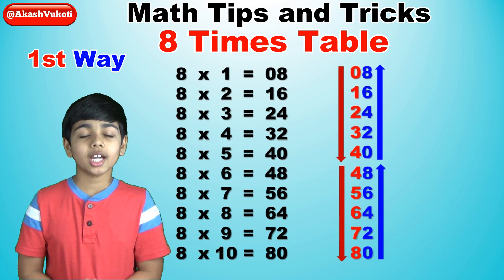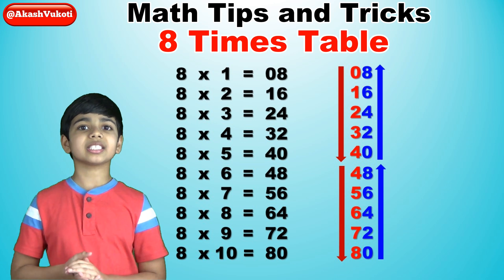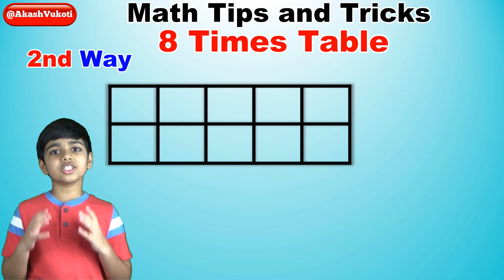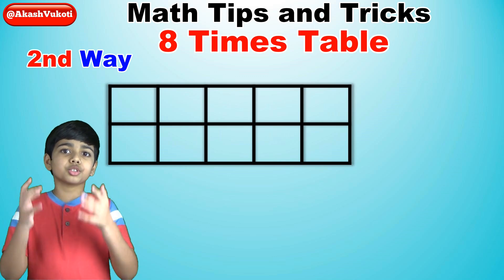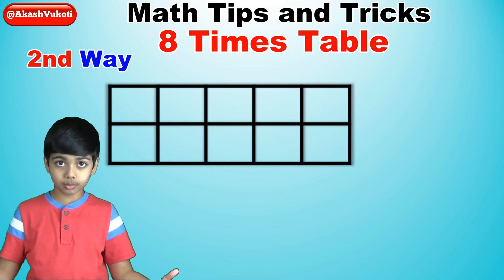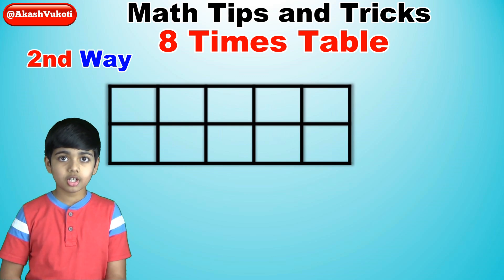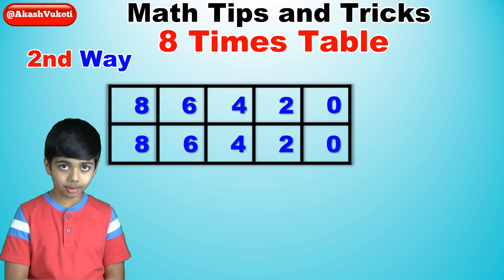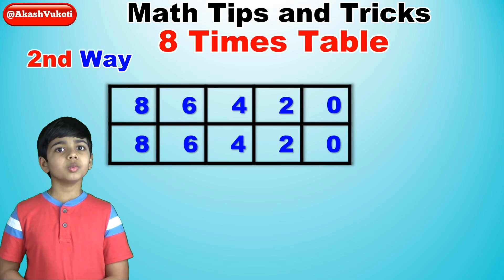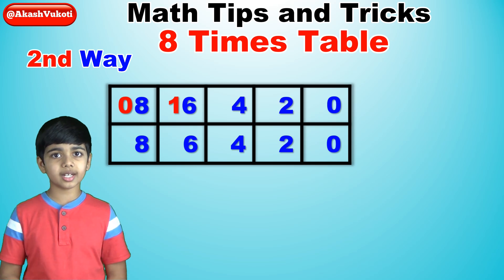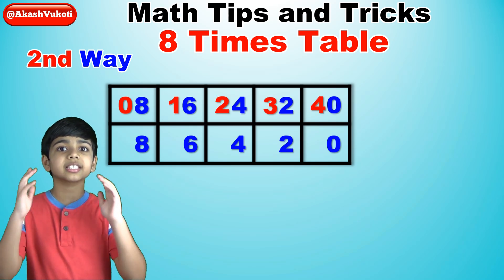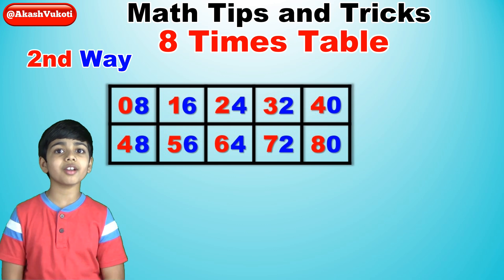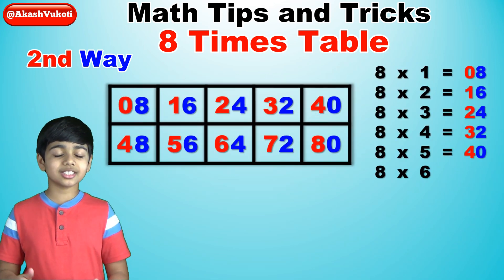And here is the second way of explaining the trick. As you can see here, let's create a box of 5 columns and 2 rows. For the 1s digits, just like you've seen in the first method, we're going to write down the 2x table from 0 to 8 in both rows, but this time backwards in the opposite direction from 8 to 0. So 8, 6, 4, 2, 0. Now for the 10s digits in the first row, we will write down the numbers from 0 to 4. And for the 10s digits in the second row, we will write the numbers from 4 to 8. And once you're finished, you will have the 8x table, as you can see right here.